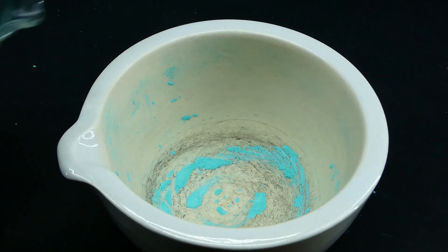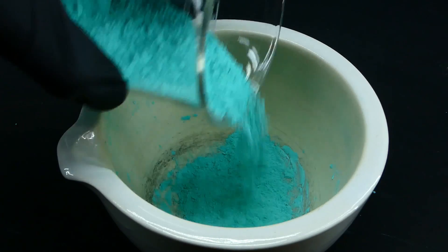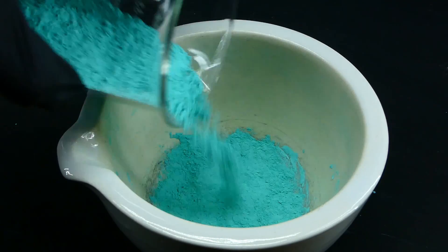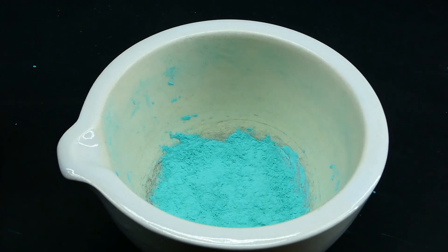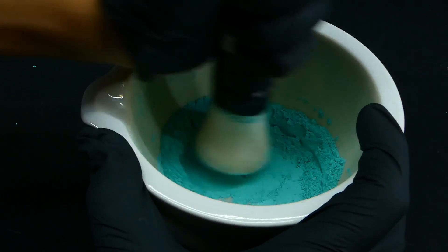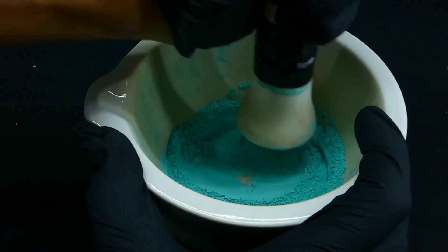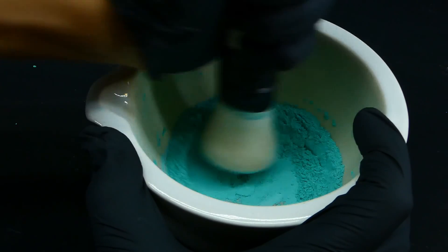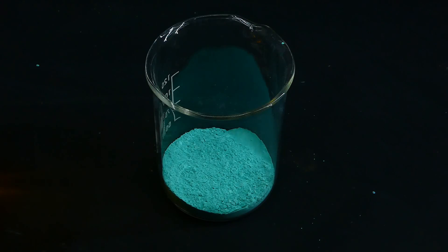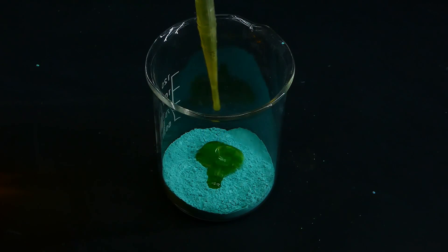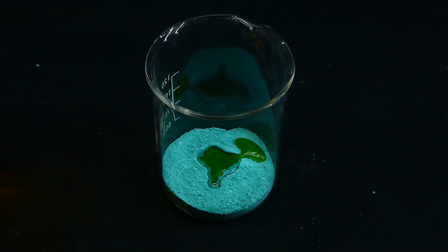Basic copper carbonate was actually used as a paint in ancient Egypt, and I wanted to recreate it. So I got some of the basic copper carbonate powder that I made and ground it down even more so it would make a better paint. I then got some linseed oil that I bought a few months ago and added some of it into the powder.